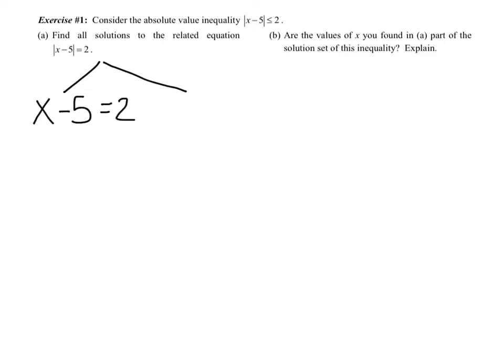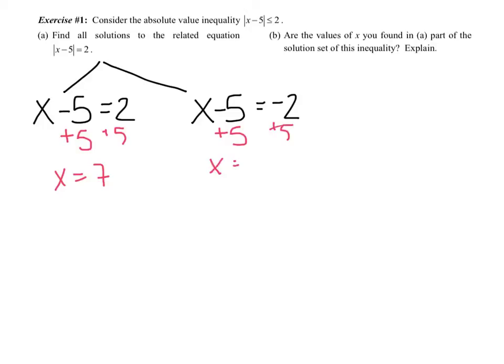Exercise one. Consider the absolute value inequality: the absolute value of x minus five is less than or equal to two. Part A says find all the solutions to this equation — I've ignored the inequality and made it an equal sign. We split it into two equations since the absolute value is by itself. I leave the first one alone, and in the second one I make that side negative. Solving: x equals seven and x equals three.